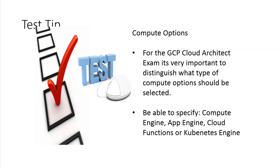The test tip — the real thing is to know what compute option to use based on the scenario given. Be able to specify Compute Engine, App Engine, Cloud Functions, or Kubernetes Engine. If it's a requirement for the customer to have a CI pipeline, Kubernetes Engine is probably a better choice. If you're looking at mobile development, App Engine might be the better fit. If you're looking at functions, triggers, or webhooks, Cloud Functions is where it's at in most cases. And if you're just looking for run-of-the-mill VMs, Compute Engine is probably the best choice.